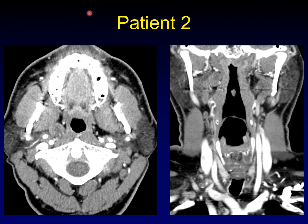Here's patient two. Pretty similar appearance. Here's the mass. There it is on the coronal. Pretty similar, but subtly different.